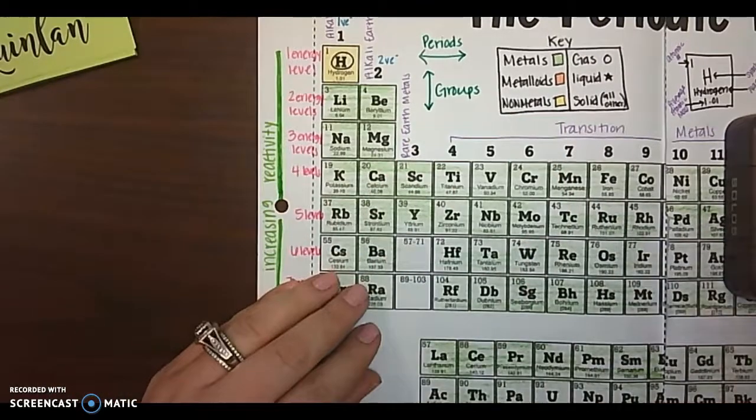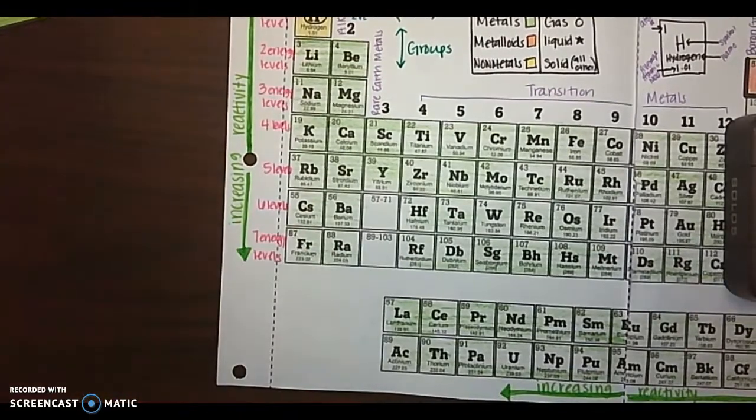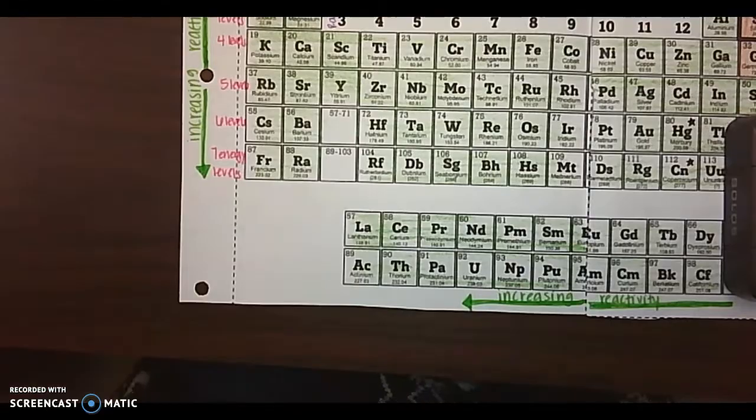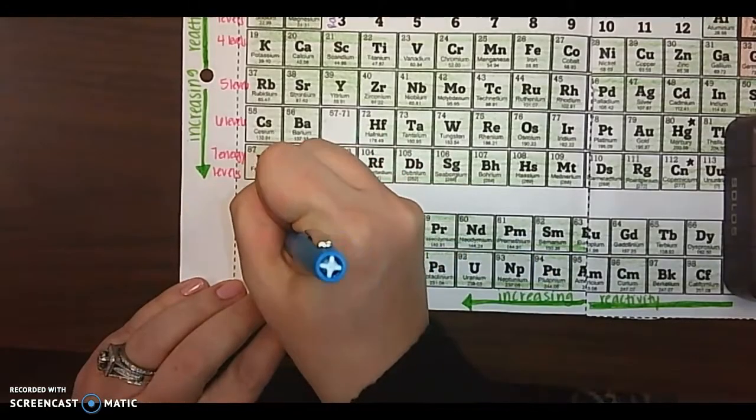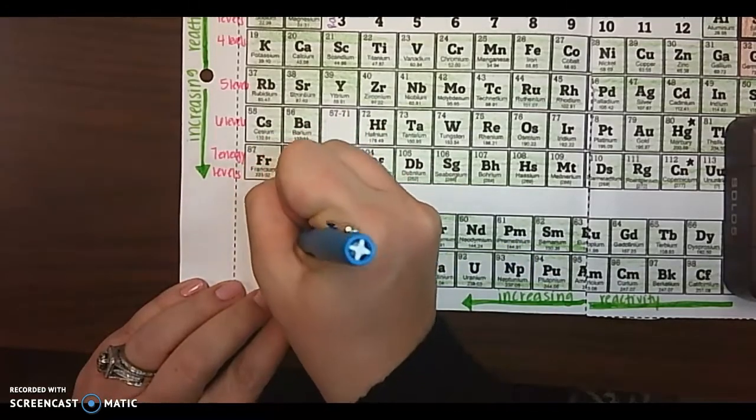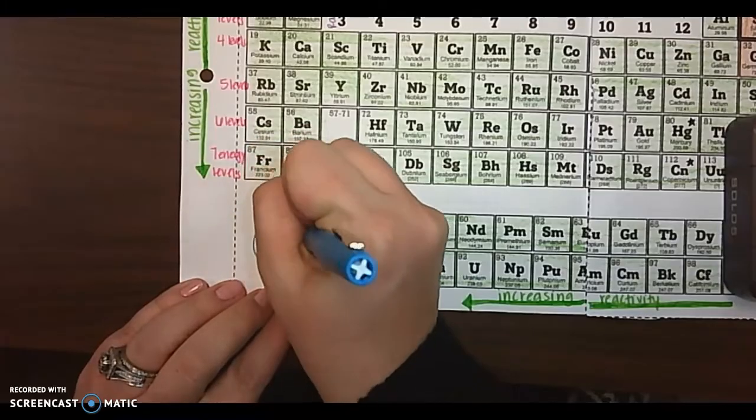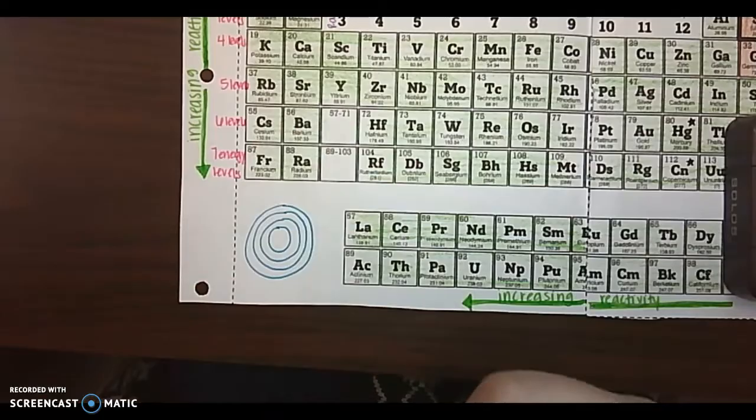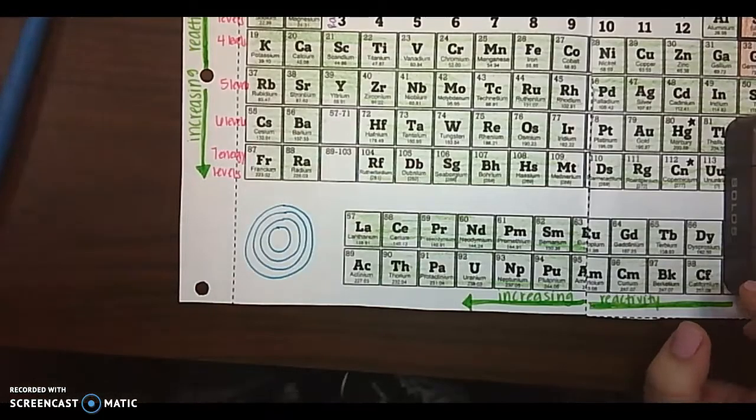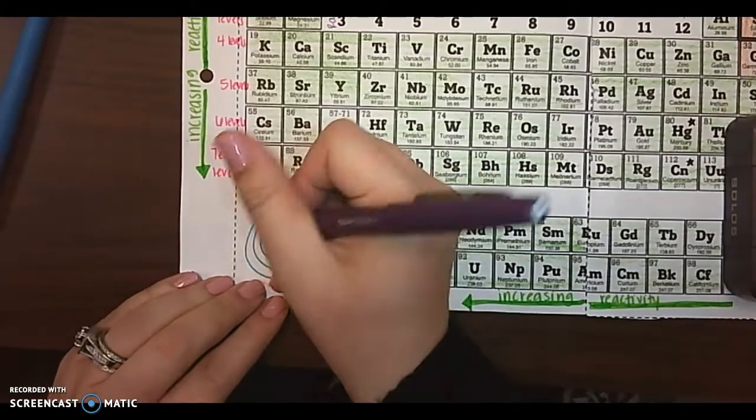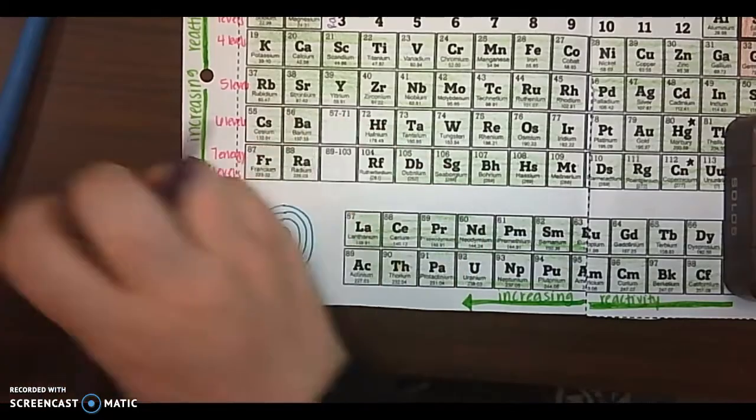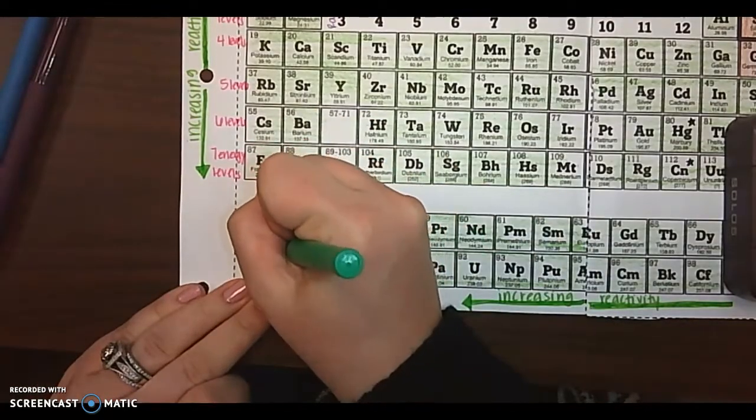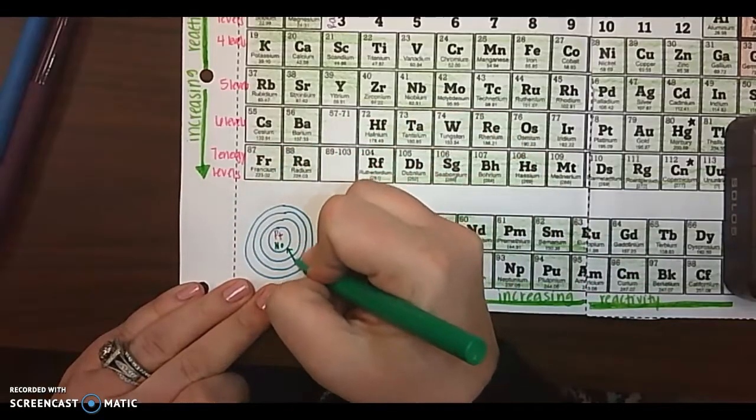Energy levels are those shells in your electron cloud. So somewhere down here, we're going to draw an atom and we're going to have our nucleus and we're going to have energy levels. So we're going to have our protons and our neutrons in the nucleus, like this.